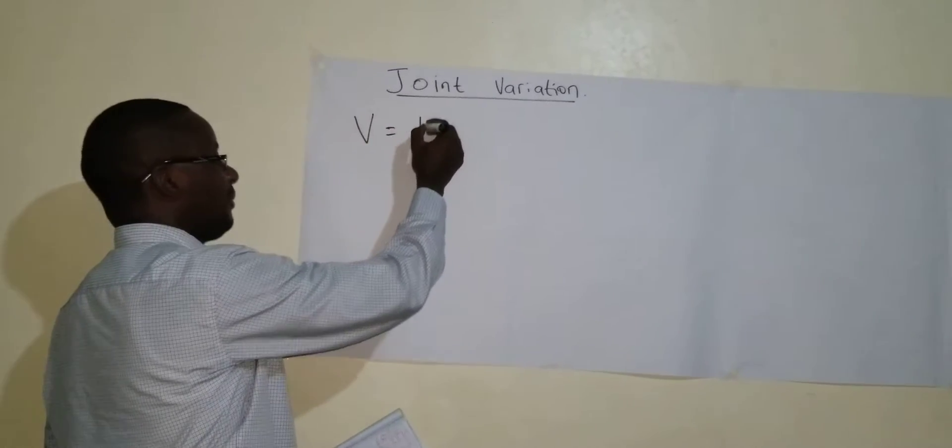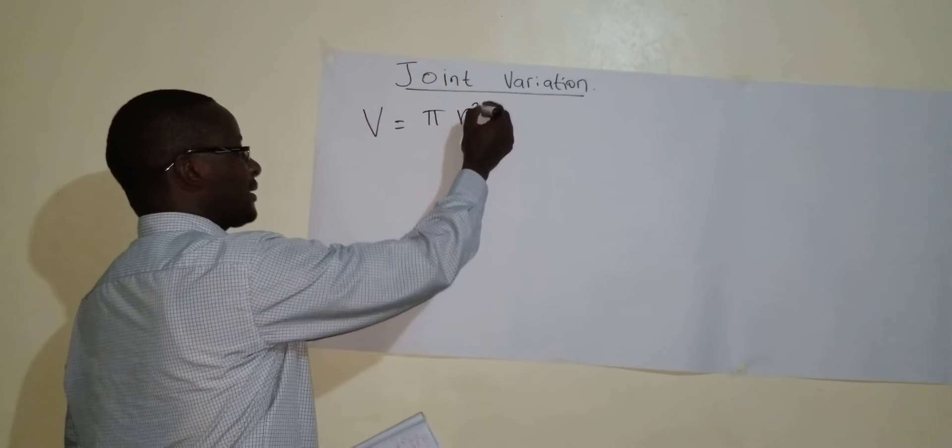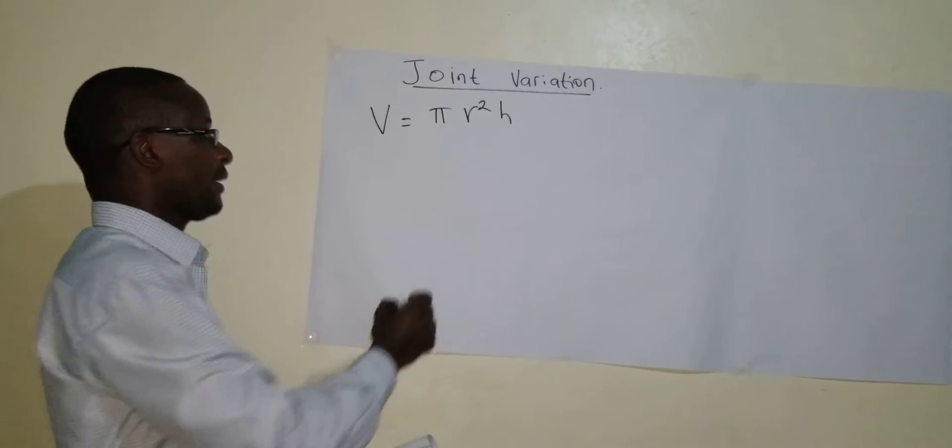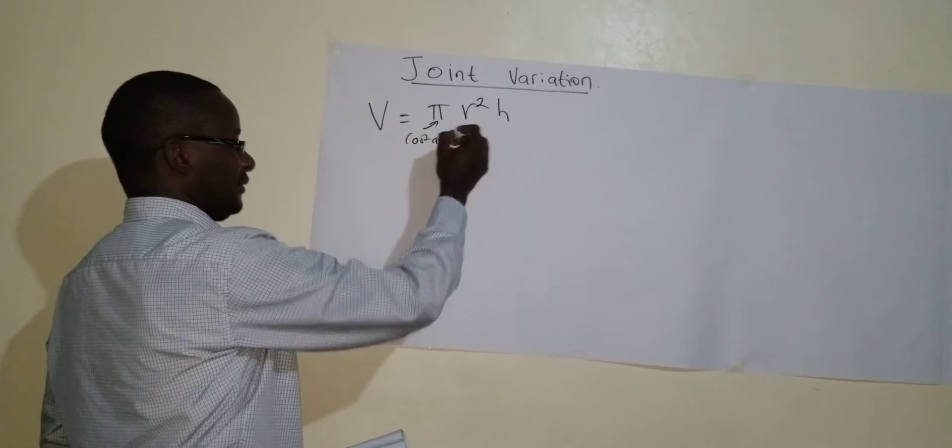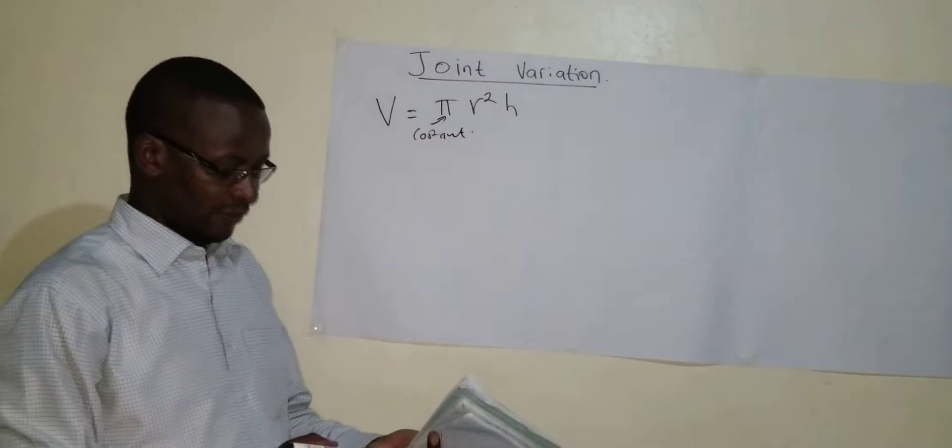V is equal to pi R squared H. Pi, in this case, is a constant. You can use anything for a constant, any symbol.